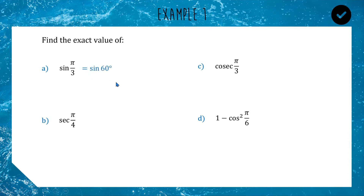Since π is 180, and 180 divided by 3 is 60, π/3 is 60 degrees. If you've got your exact values memorized it makes these questions way easier, or you can check your formula sheet. The exact value of sine 60 is √3/2, so sine(π/3) = √3/2.